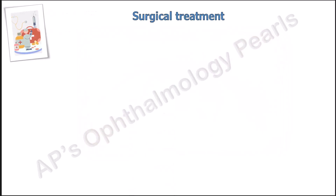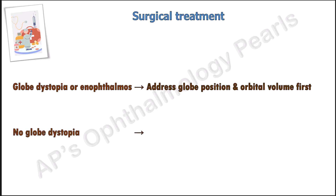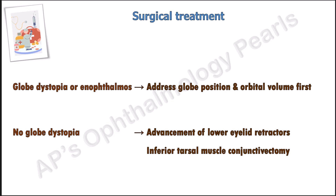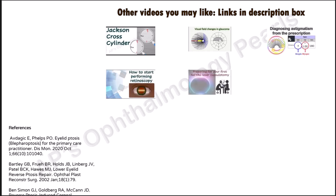Treatment of reverse ptosis is essentially surgical. The type of surgical intervention depends on the cause. In the case of globe dystopia or enophthalmos, the globe position and orbital volume must be addressed prior to eyelid surgery. When the globe is in normal position, either advancement of the lower eyelid retractors or an inferior tarsal muscle conjunctivectomy may be performed.